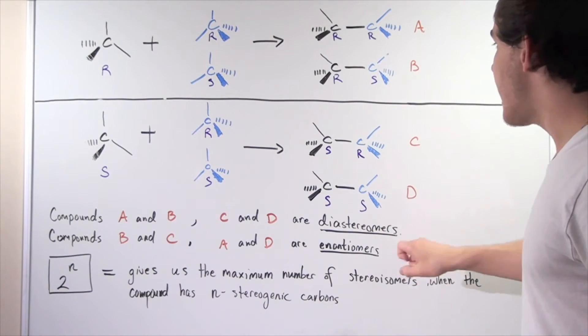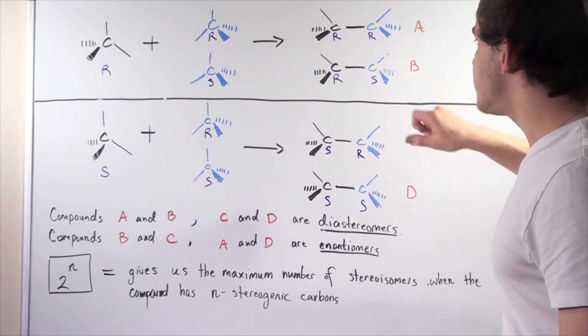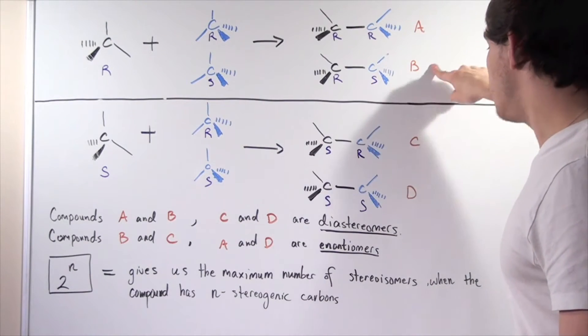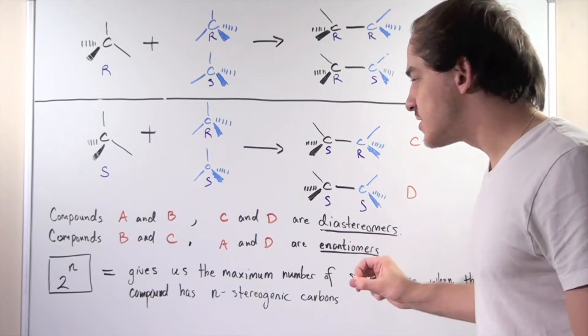So A and D are enantiomers and R-S becomes SR. R becomes S and S becomes R. So B and C are enantiomers.